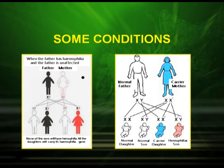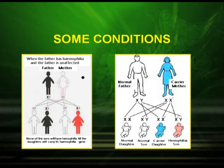Now let us study the mechanism of the cross where an X^h Y father with hemophilia is crossed with a carrier mother. The possible outcomes for such progeny will be: an X Y son without hemophilia, a daughter with hemophilia having the allele on both X chromosomes, a son with hemophilia having the hemophilic gene on the X chromosome, and a carrier daughter with the h gene on one X chromosome and a normal X chromosome.